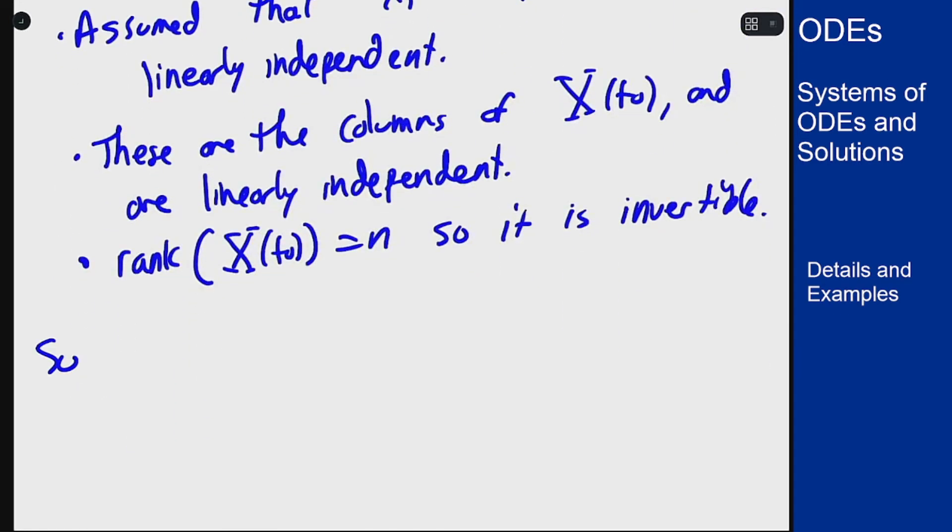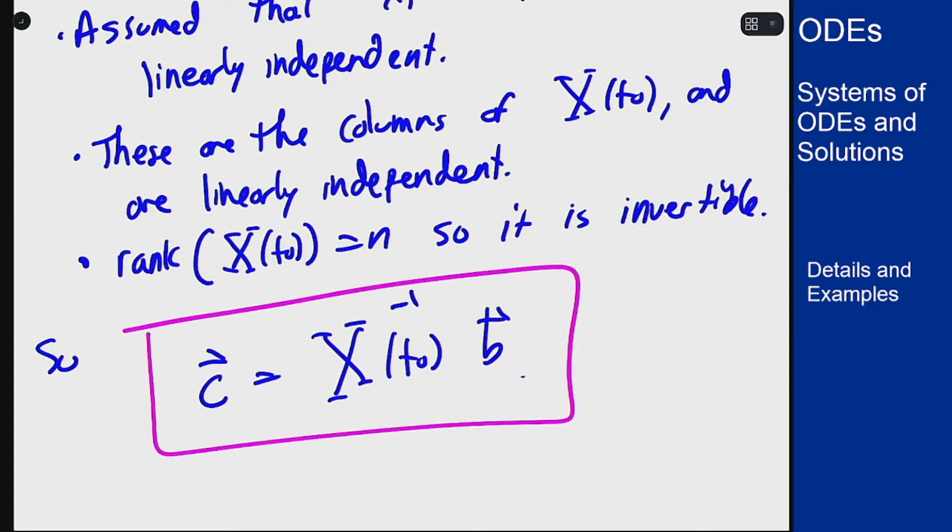This means c can always be found as the inverse of this matrix times the vector b. For any b I have an invertible matrix, so I can always solve the system and I can do so by multiplying by the inverse to get to this point. So we can meet any initial condition.